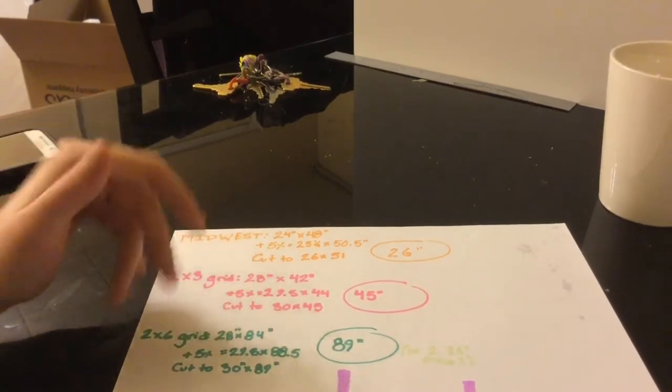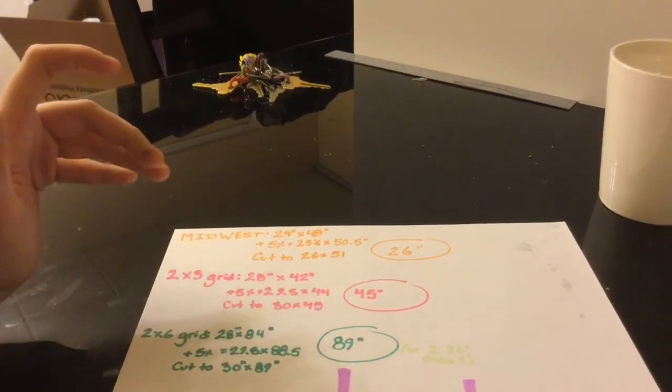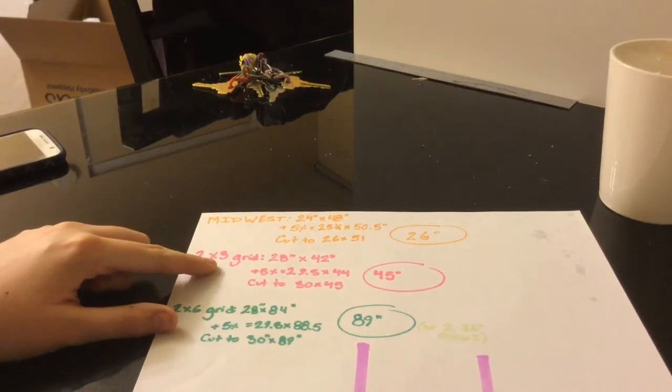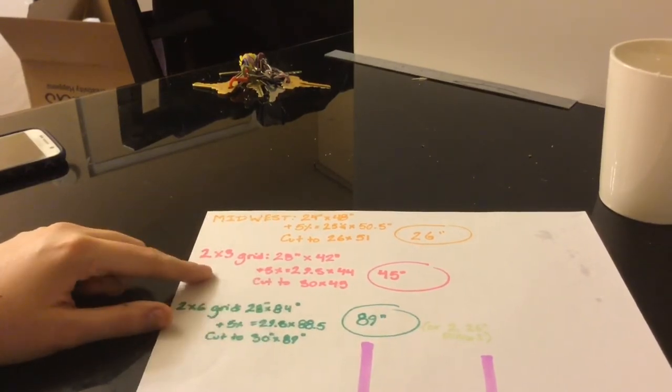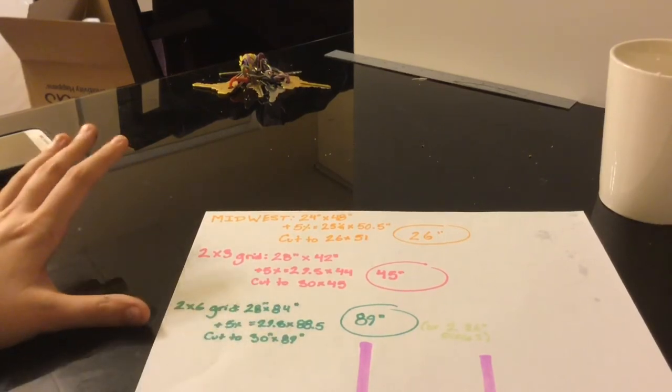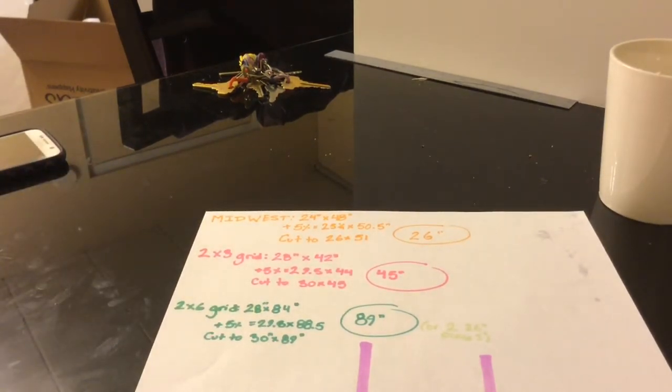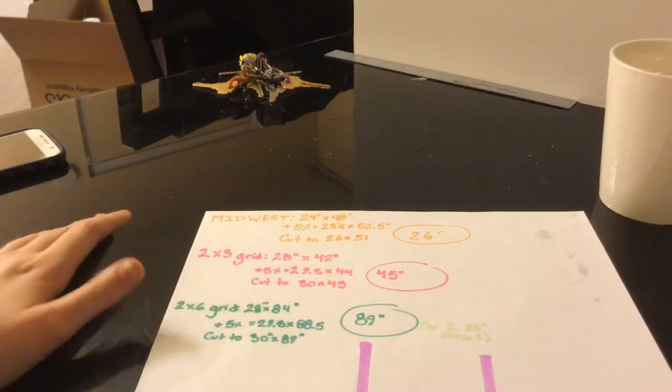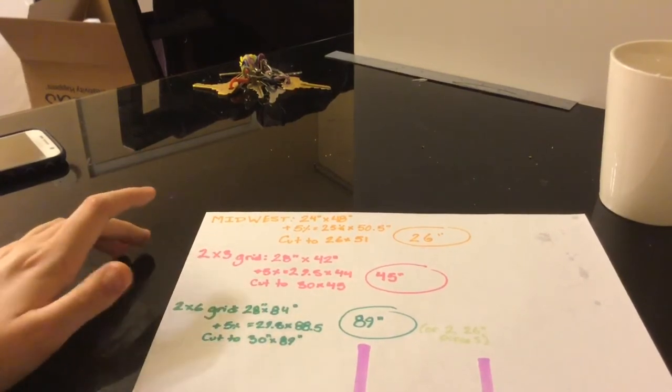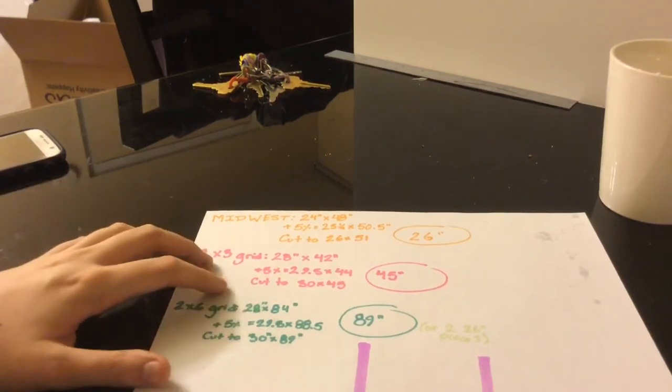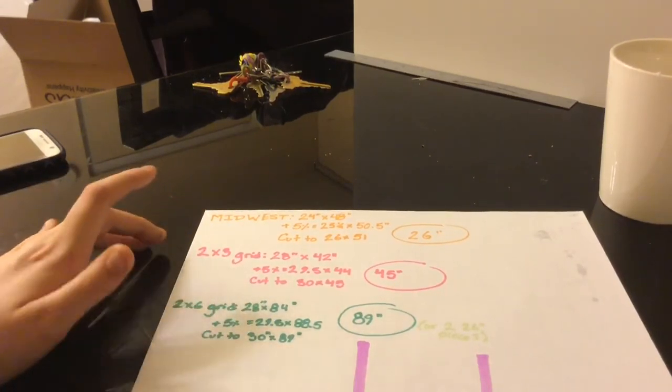For a 2 by 3 grid, each grid on a normal CNC cage is 14 inches. So that comes out to 28 by 42. It's not 2 foot by 3 foot because each grid isn't exactly a foot. Adding your 5% and then rounding up a little bit, you're going to... If you're skilled, you're going to cut to 30 by 45. But if you're not that great at sewing right along the edge, you're going to cut to about 32 by 47.